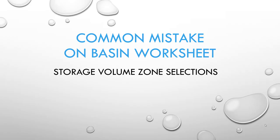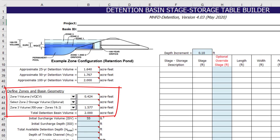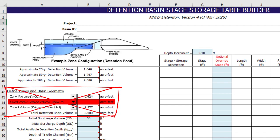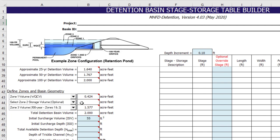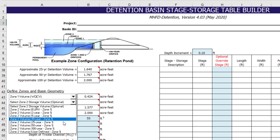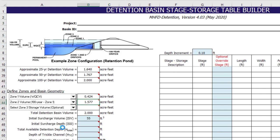Some people have mistakenly selected storage volumes for zone 1 and zone 3 on the basin worksheet but have skipped zone 2. This mistake was most likely based on the assumption that zone 3 is always the 100-year storage zone. For example, a person designing a water quality facility with 100-year detention but not including full-spectrum detention may select water quality capture volume for zone 1 and 100-year storage for zone 3 without selecting excess urban runoff volume for zone 2. This will lead to problems in subsequent calculations on the outlet structure worksheet. Users should never skip zones regardless of the design storms being included in the design. Instead, the user should select the 100-year storage volume in the zone 2 pull-down and leave the zone 3 pull-down blank.